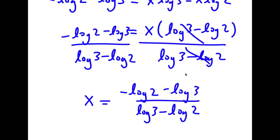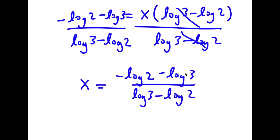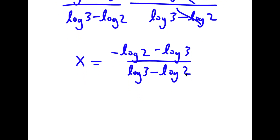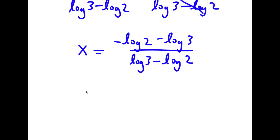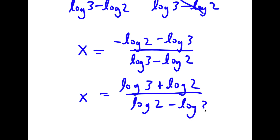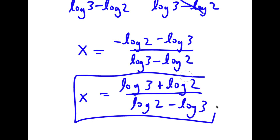So if I divide both sides by log 3 minus log 2, I have x is equal to negative log 2 minus log 3 over log 3 minus log 2. If I multiply both sides by negative 1, I get x is equal to log 2 plus log 3 over log 2 minus log 3. So this is my answer.